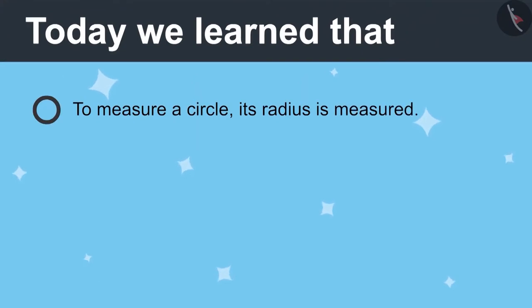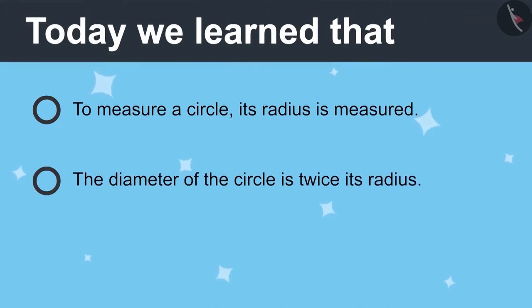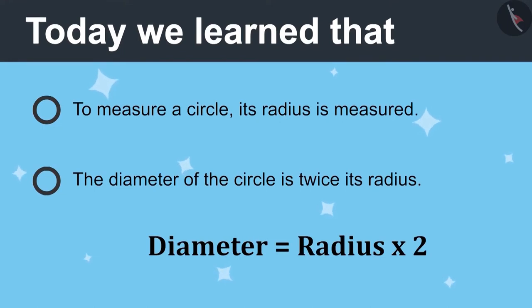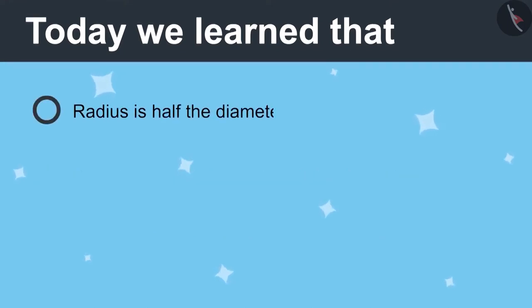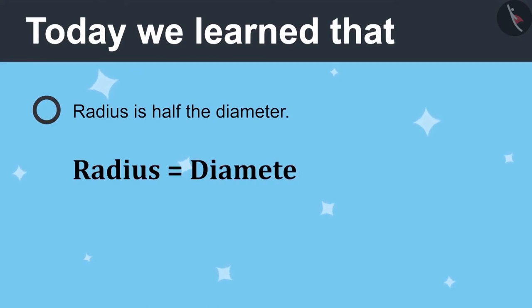Let's go. Today we learned to measure a circle, its radius is measured. The diameter of the circle is twice its radius. Diameter is equal to radius multiplied by 2. Radius is half the diameter. Radius is equal to diameter divided by 2.